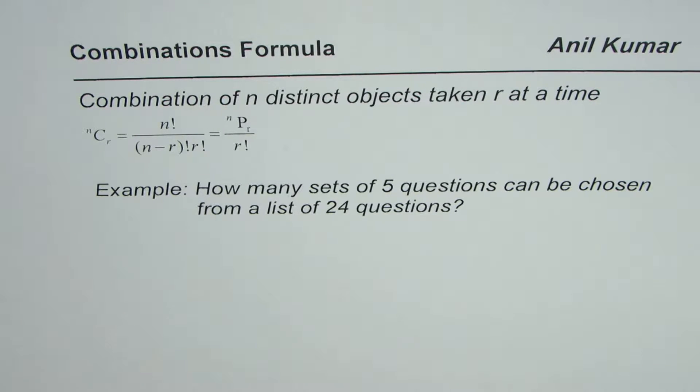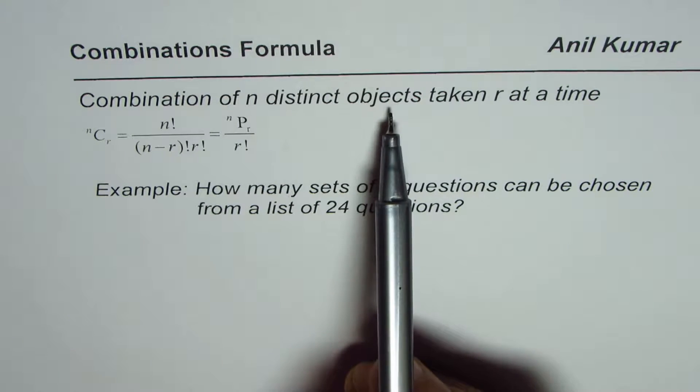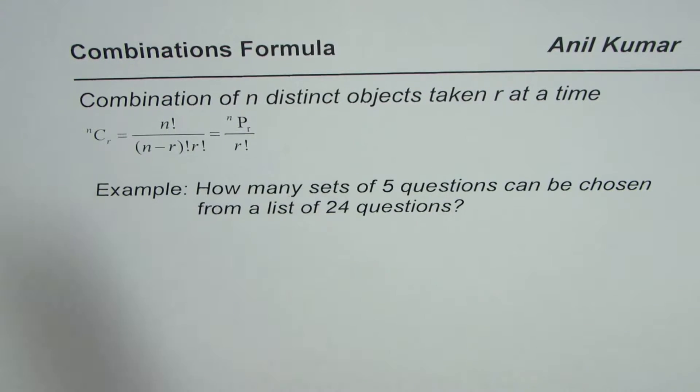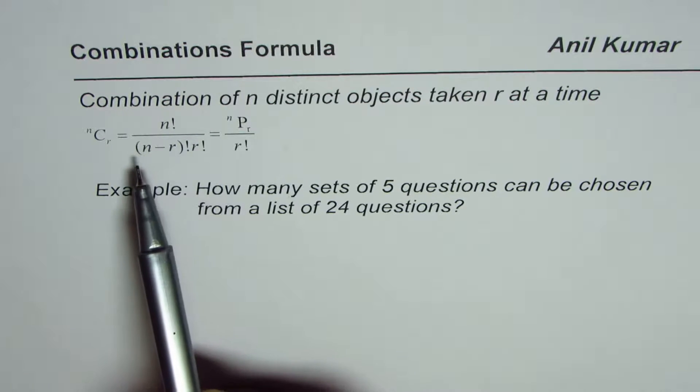I'm Anil Kumar and I've taken up an example where the combination formula can be directly applied. As you remember, combination of n distinct objects taken r at a time is nCr, which is n factorial divided by (n minus r) factorial times r factorial.